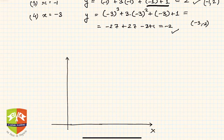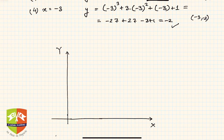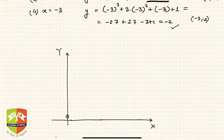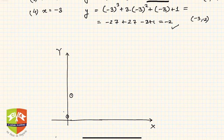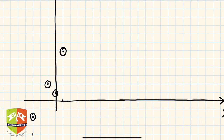Let us now plot these points on the graph with x and y axes. The point (0, 1) is marked first, then (1, 6) counting up 1, 2, 3, 4, 5, 6. Then (-1, 2) is plotted, and (-3, -2) is somewhere in the lower left. Clearly these points do not fall on a straight line, so if you join them freehand, this is how the curve will look.